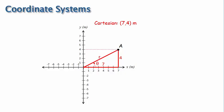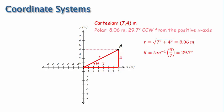We can then calculate R with the Pythagorean theorem, which comes out to be 8.06 meters. We can then find theta with the inverse or arctangent function. This gives us an angle of 29.7 degrees. We can now write the location of A in polar coordinates: 8.06 meters, 29.7 degrees counterclockwise from the positive x-axis.